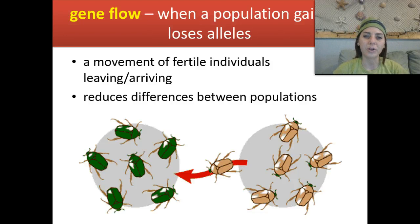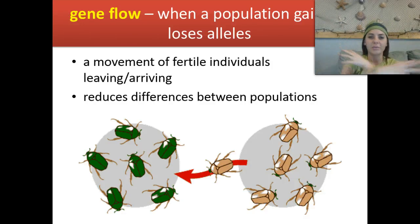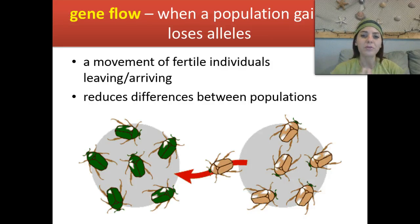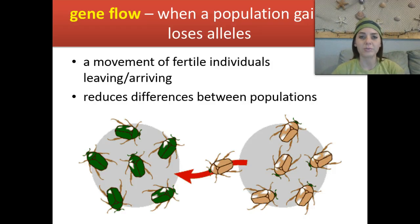Gene flow is when a population gains or loses alleles. Some alleles are passed on from one population to the next, and we have alleles being exchanged — that's the flow of genes. A movement of fertile individuals either leaving or arriving from one population to the other, and it reduces differences between populations because it's an even mix.